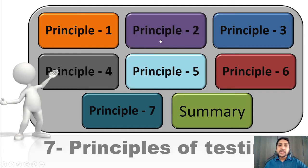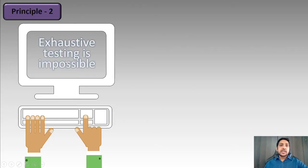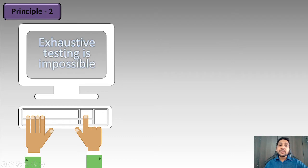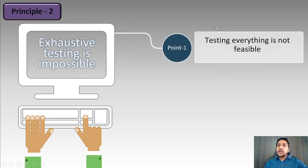Now the second principle states: Exhaustive testing is impossible. Be very careful in the exam — they may just give 'exhaustive testing' as an option. Exhaustive testing is not the principle; 'exhaustive testing is impossible' is the principle. Testing everything is not feasible — that is the first point.